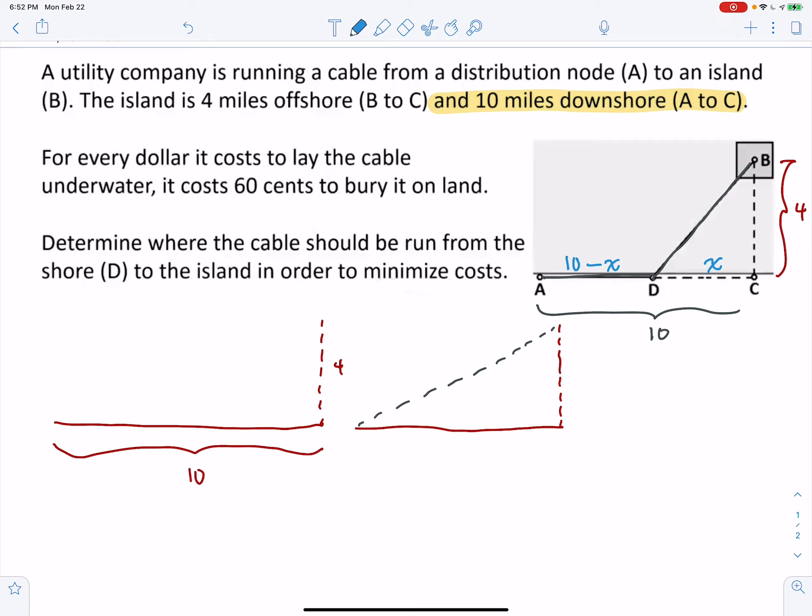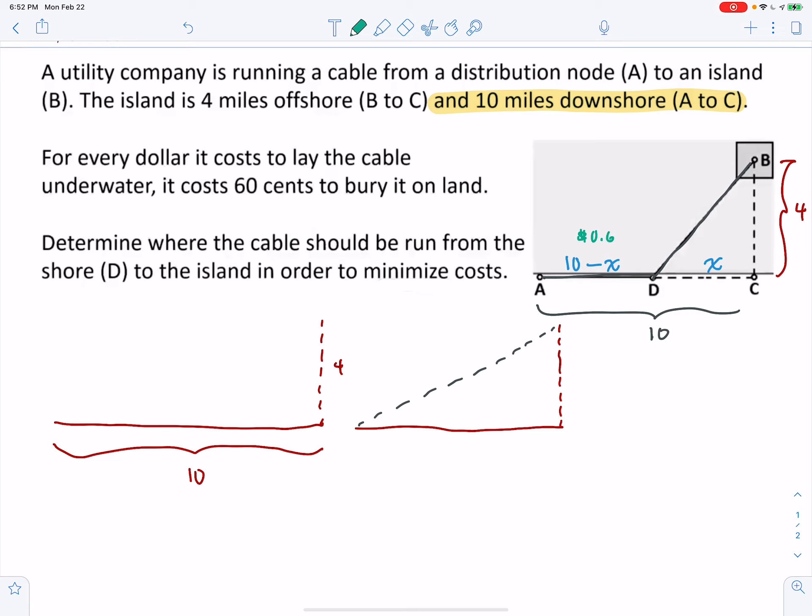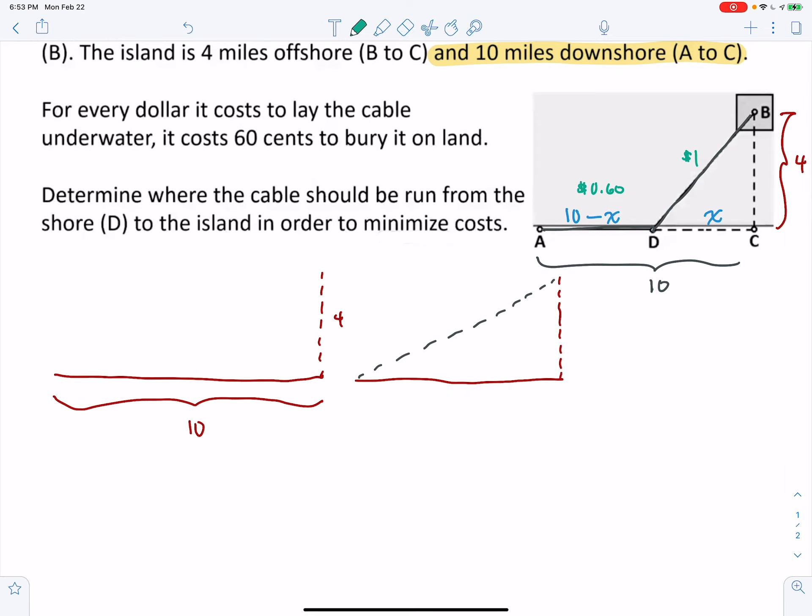So we seek to minimize the cost. Now, the cost of this part here is 60 cents per mile when compared to this, which is a dollar per mile. So that basically says if it costs $100 per mile to lay the cable across the water, it's going to cost $60 per mile to lay the cable on the shore. So what's our cost function? Well, our cost function is 60 cents times the distance, which is 10 minus X, plus 1 times that distance.